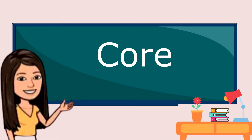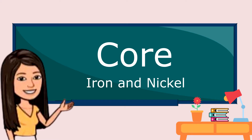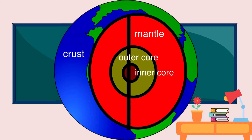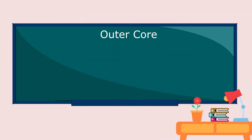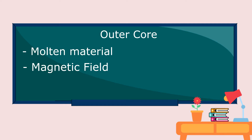The core is made up of almost entirely of metal, iron, and nickel. The core has two layers: the inner and the outer core. The outer core is made up of molten material. It is responsible for the Earth's magnetic field. It is 2,900 kilometers below the Earth's surface. The temperature in the outer core reaches up to 2,000 degrees Celsius.